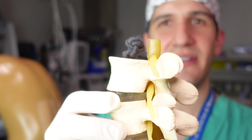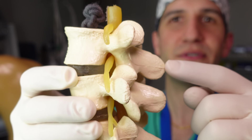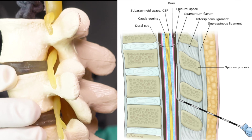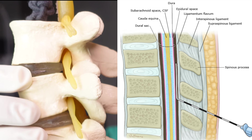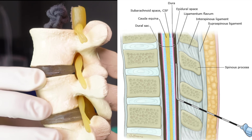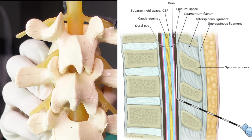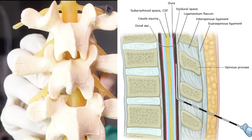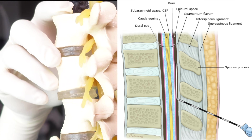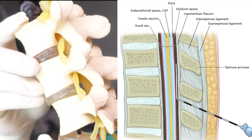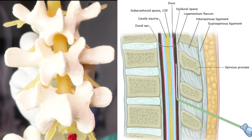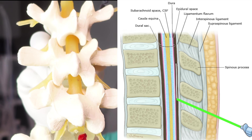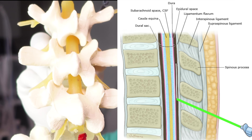If you take a look at this model of a spine right here — where these are the spinous processes, which is what you would feel on somebody's back — you can see how when the model is up straight like this, there's really no way to pass anything in between the spinous processes. But if you have a patient who is hunched over like this, you can see how the space really opens up in a way that would allow you to pass a needle in between the spinous processes.